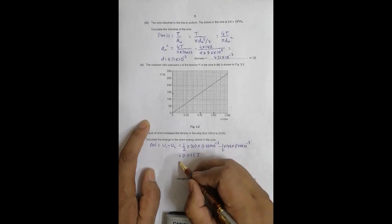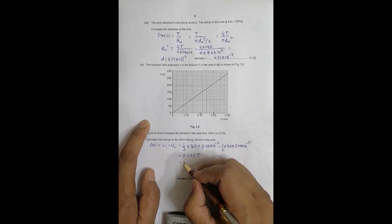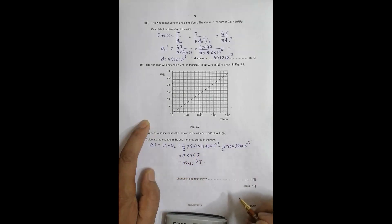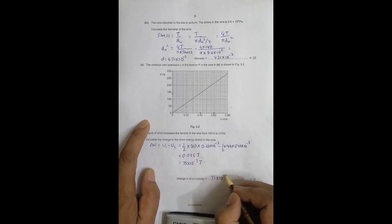The change in strain energy stored in the wire is 0.035 J, or equivalently 35 × 10⁻³ J. This is the complete solution to this problem.